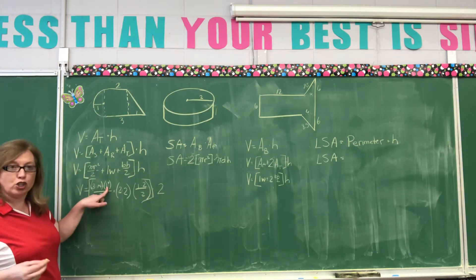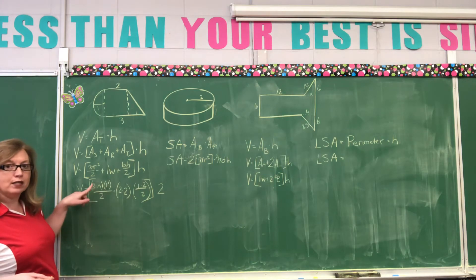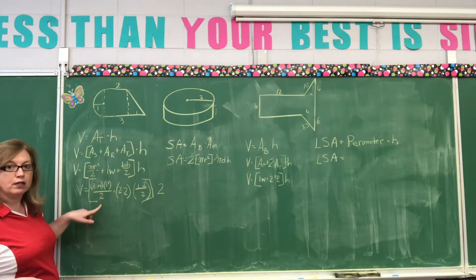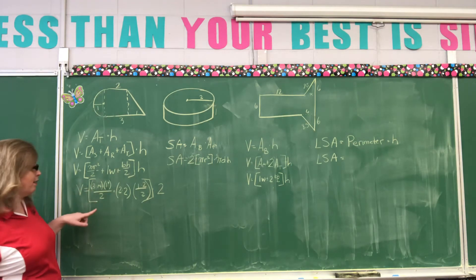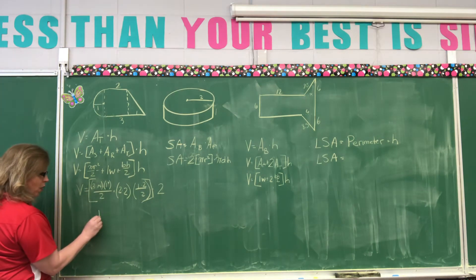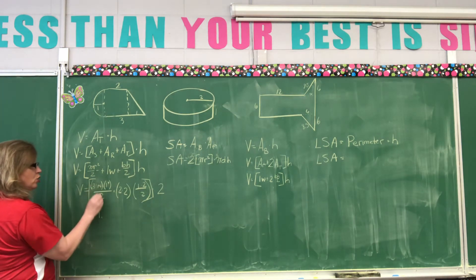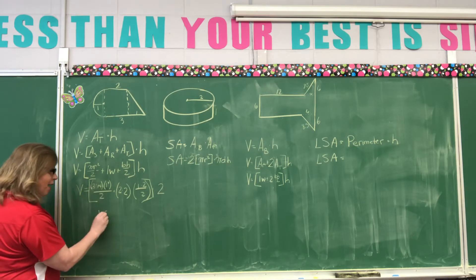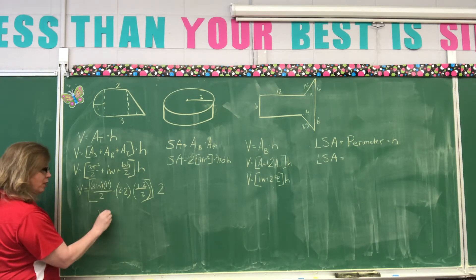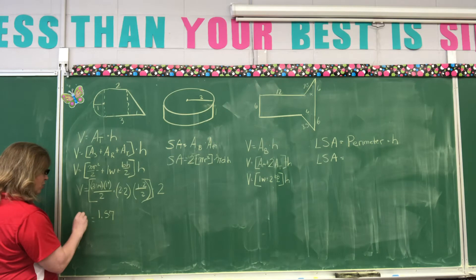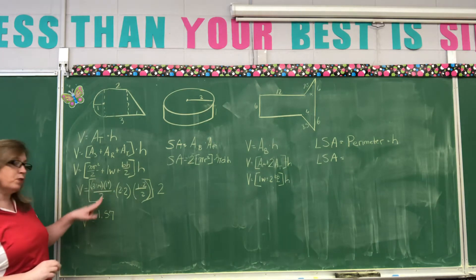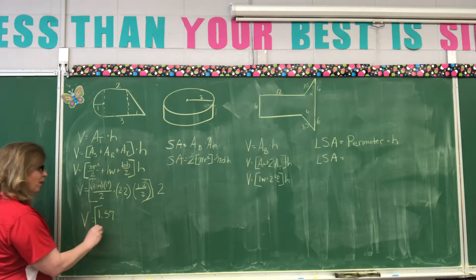We have 1 squared, which is 1. So, 1 times 3.14, which is 3.14, divided by 2. So, we're going to say 2 goes into 3, 1 time. 2 goes into 11, 5 times. 2 goes into 14, 7. So, so far, this one equals out to be 1.57.